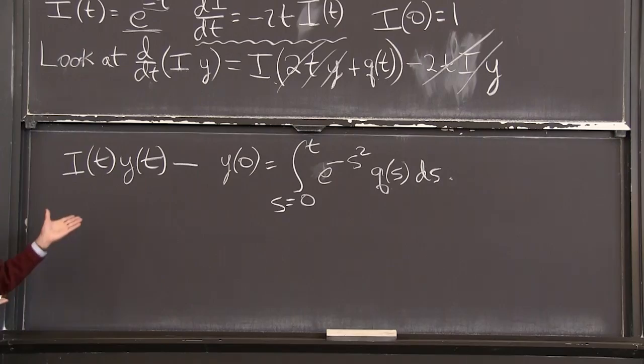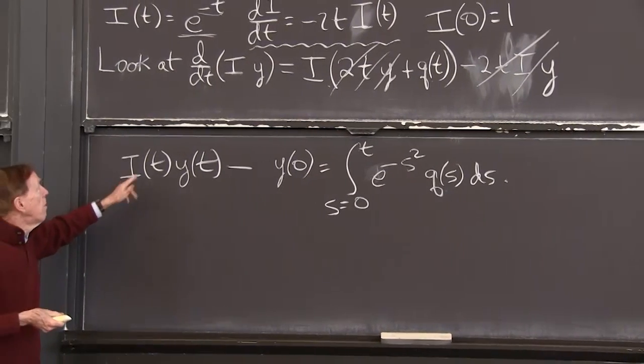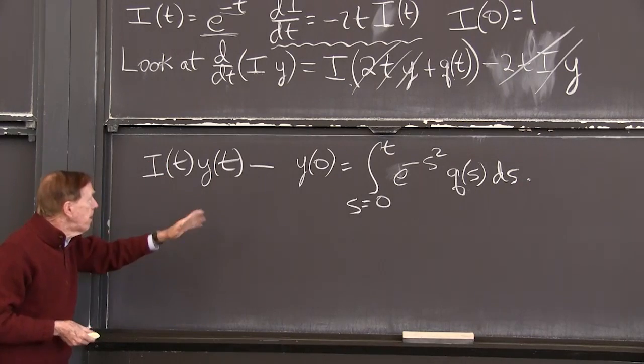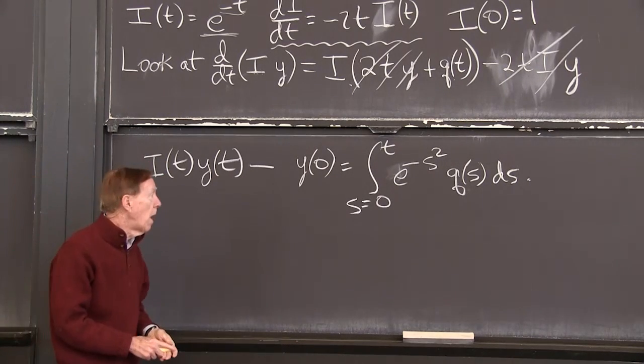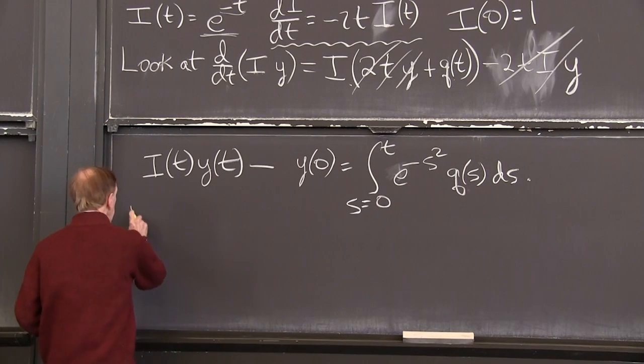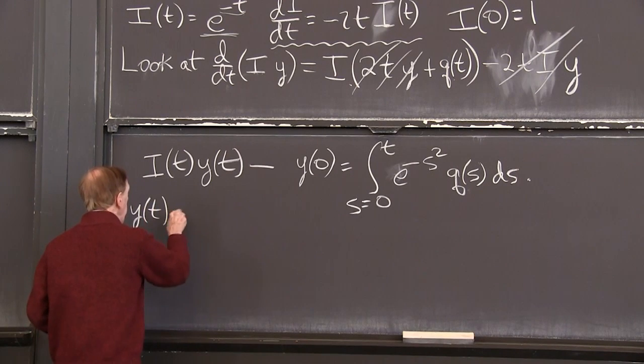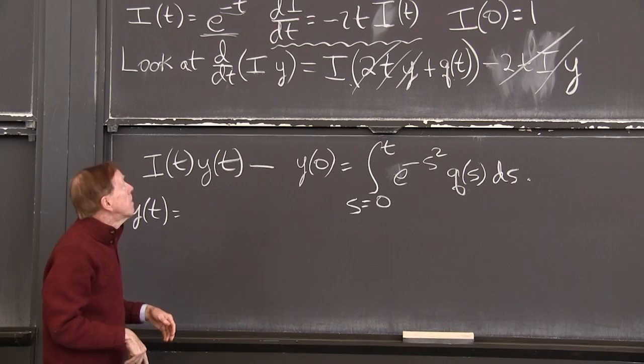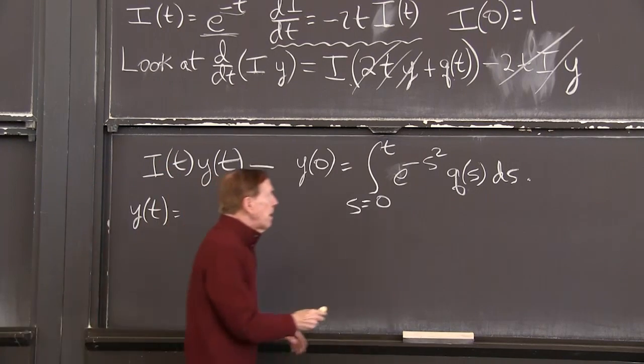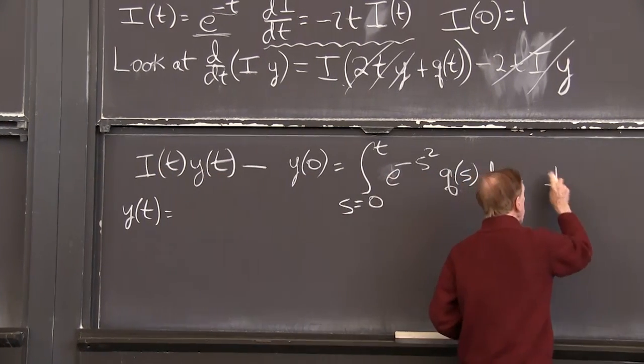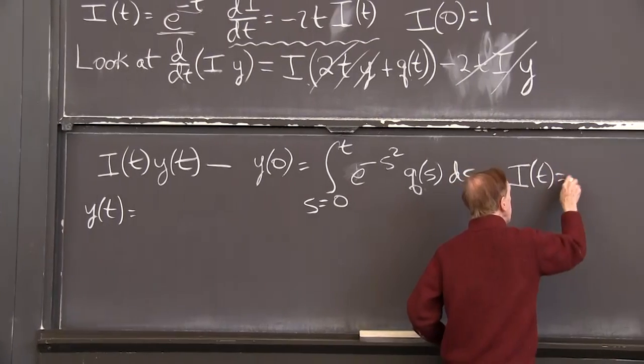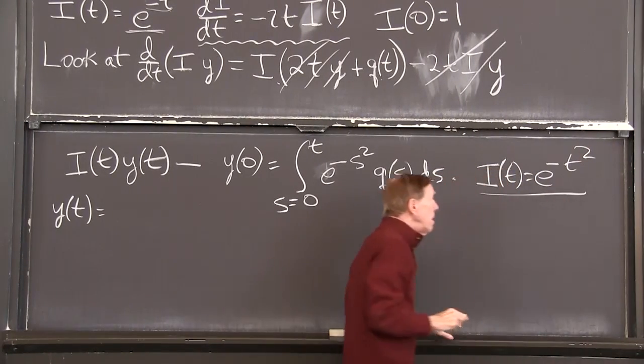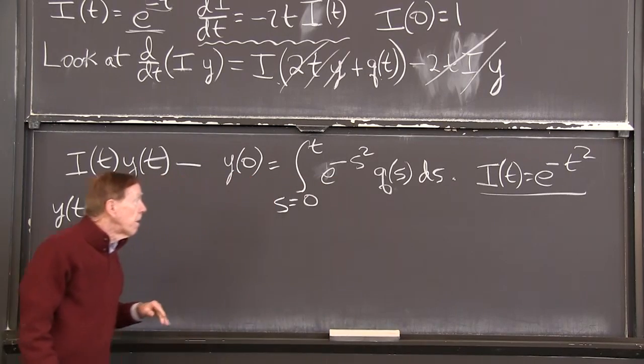I'm almost here. I just want to remember I want to divide by i of t. So I have a formula for y. So my formula for y, when I divide by i of t, don't forget what i of t is. Let me put it again here. Let me remind myself. i of t is e to the minus t squared. That was the magic integrating factor.